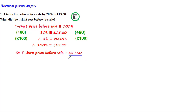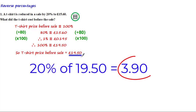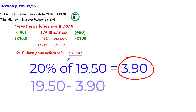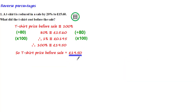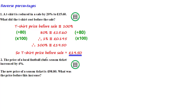You can check your answer by taking 20% of this value, and since this was a reduction by 20%, if we subtract that value from £19.50 we should get £15.60. Let's have a look at another problem.